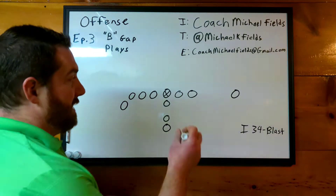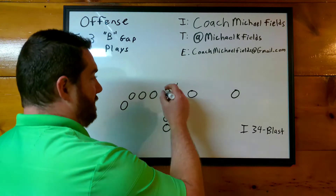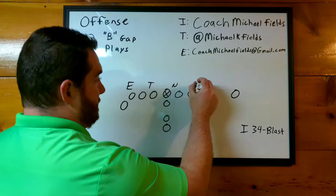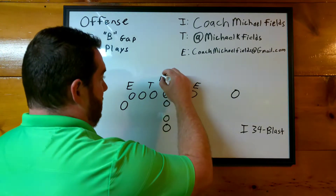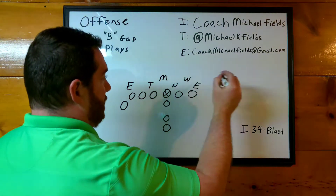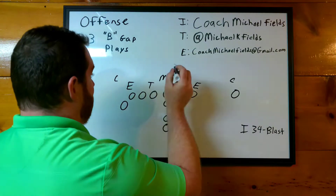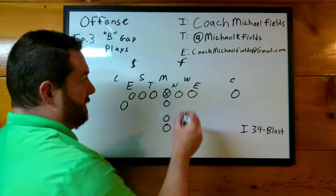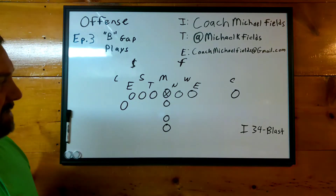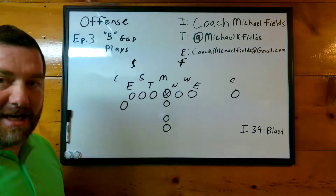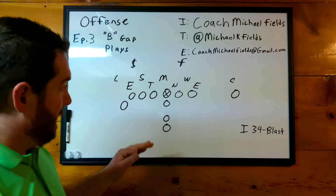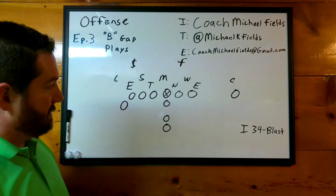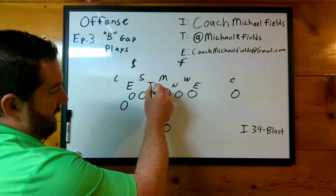Against a standard 4-3 front, we have the nose here, we got our tackle, this B gap, there's the end. Got the Mike backer, got the Will, corner here and here, Sam, strong and free. So a standard 4-3 defense. This is going to be a weak side play because we've got a guy right here in our B gap on the strong side.